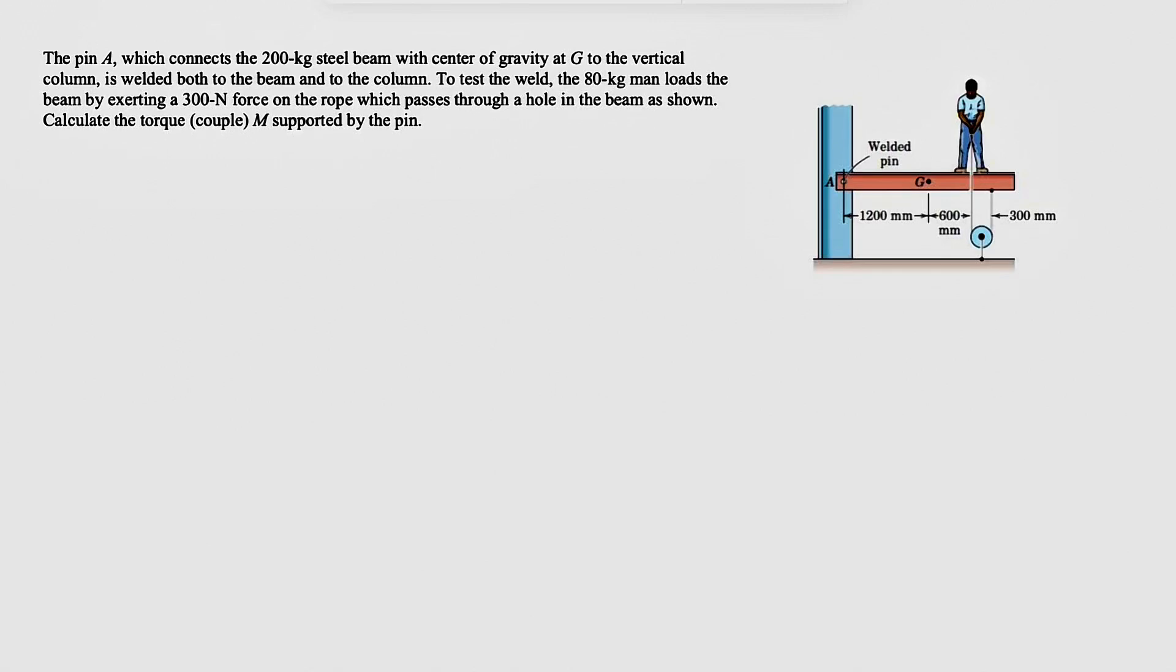All right guys, we have another question from the third chapter of the Merriam textbook engineering mechanics. We have the pin at point A which connects the 200 kilogram steel beam with center of gravity at point G to the vertical column that is welded both to the beam and to the column.